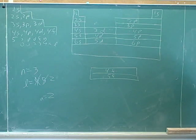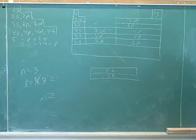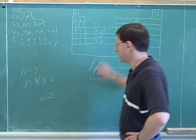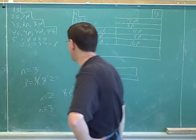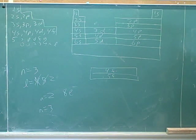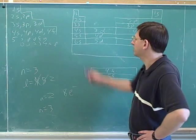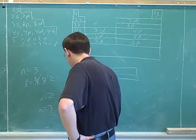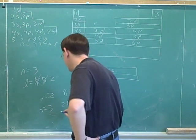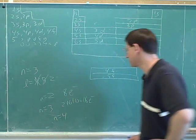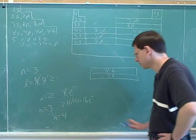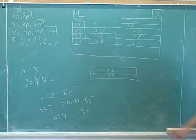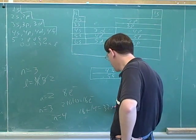How many electrons can fit in total in the second shell? Two plus six equals eight. How about the third shell? It has s, p, and d subshells: two plus six plus ten equals eighteen electrons. And the fourth shell? Eighteen plus fourteen gives us thirty-two.